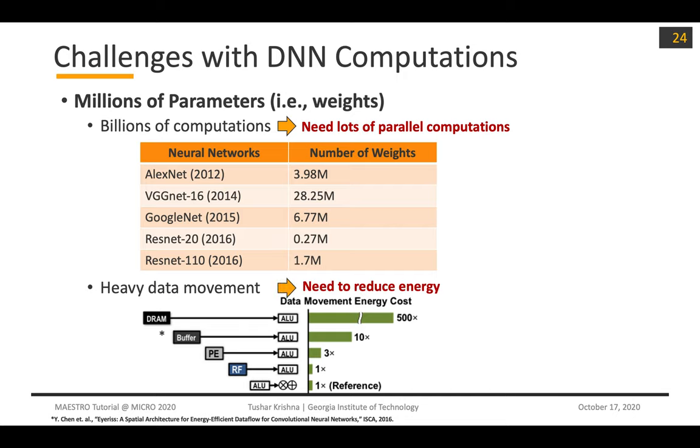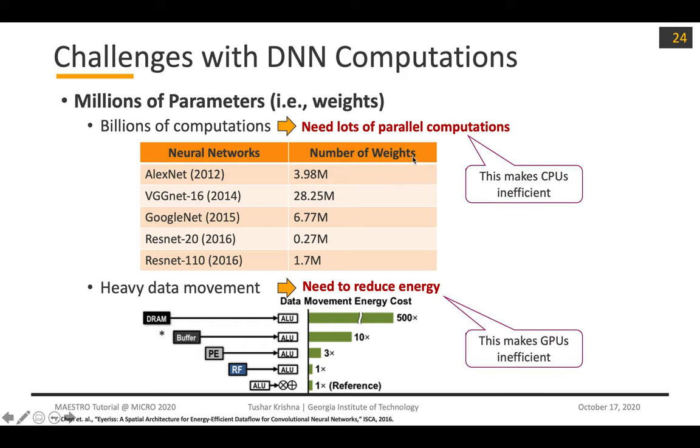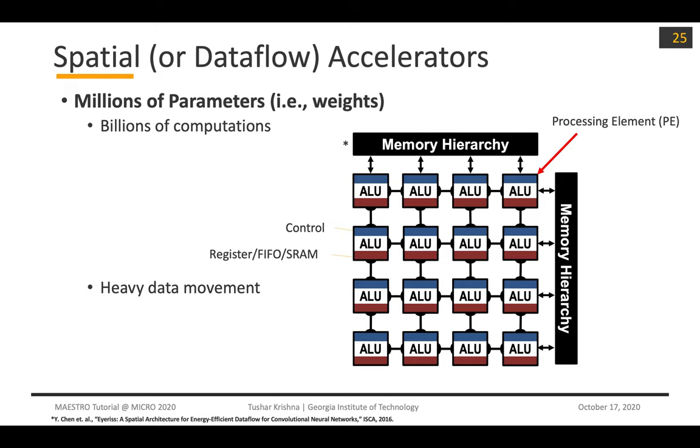Fundamentally, if you have to run these efficiently, you need to reduce energy. At a high level, CPUs are inefficient for the first piece. Even if you have multi-core CPUs, there are only tens of ALUs that you can run every cycle. GPUs are better because GPUs have hundreds or thousands of ALUs that can run these computations, which is why GPUs actually led to the deep learning revolution in the first place. But GPUs are inefficient from an energy perspective because they're fundamentally just communicating via memory.